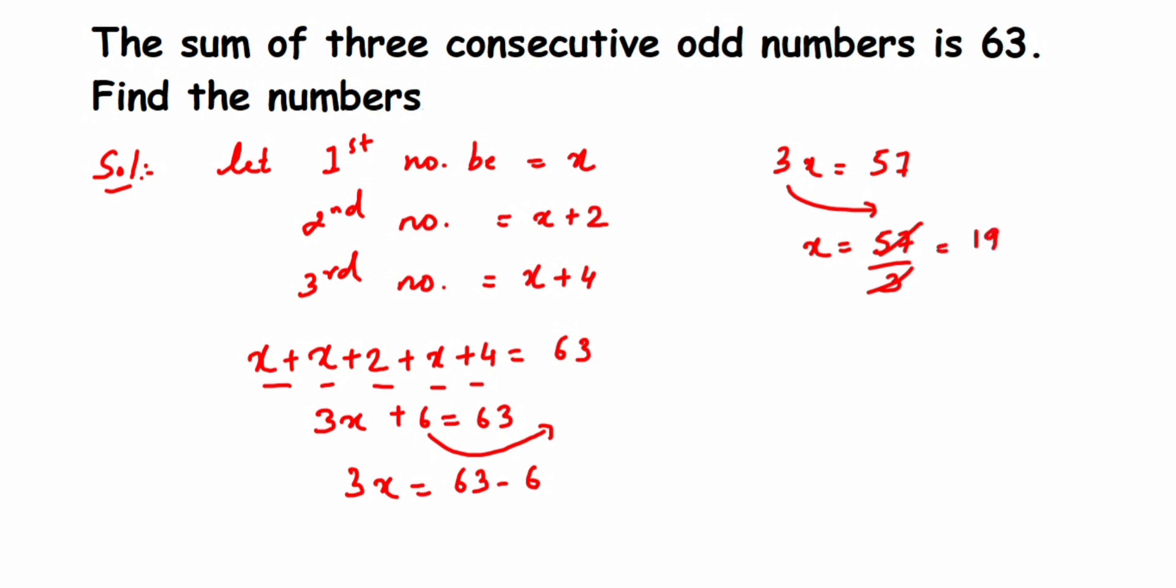It means your first number which we have assumed as x is equal to 19, and the second number x plus 2 will be equal to 21, and x plus 4 will be equal to 23.